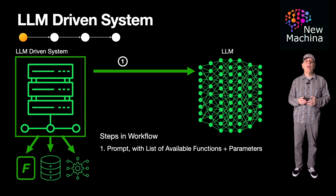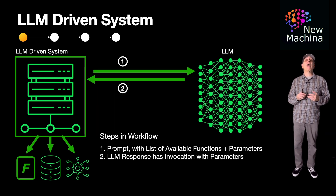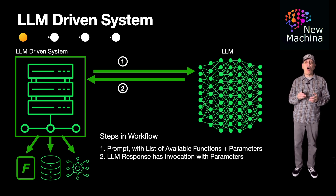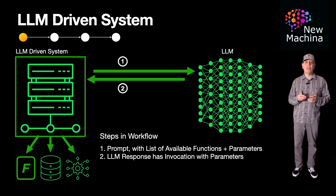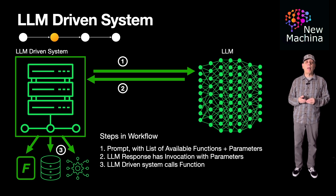In step one of this lifecycle, the LLM-driven system prompts the LLM. In this step, the LLM provides a list of functions along with a description of what each function does, along with the parameters that you would pass to each function. In step two, the LLM receives the prompt along with the list of functions and their respective parameter lists, and the LLM determines if calling one of these functions is needed to generate a final response. If so, the LLM replies back with a function invocation, including the parameters to use.